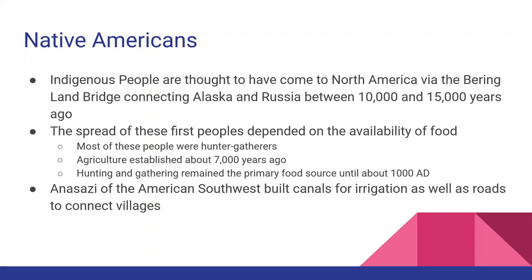By the time we get to the 1300s, Native American cultural groups are spread all throughout North America and South America, and they develop very different ways of life and very different political structures. One group, the Anasazi, is very representative of what you see in the Southwest. The Anasazi nation subsisted on farming, developed canals for irrigating, and developed cisterns to collect and provide water. The fact that the Anasazi could do agriculture meant they were able to build fairly large villages, and in places like modern-day New Mexico there's a settlement known as Chaco Canyon.